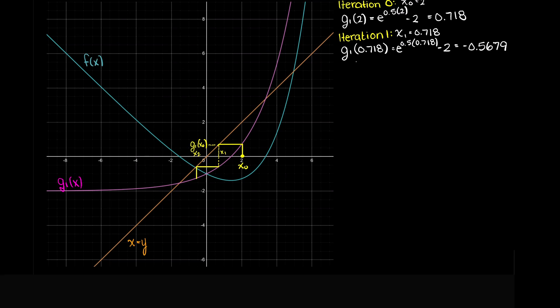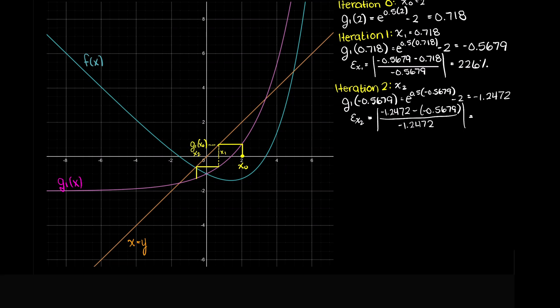Now, we should be converging as that is what we are beginning to see here graphically, so let's validate that with our percent error formula. Our initial error is 226%. Now, iteration 2 we plug in x1 and we get minus 1.247, and this gives us a 54.4% error which makes sense as we are narrowing in on our fixed point.